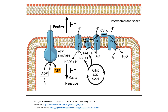This results in two reasons why hydrogen ions want to move from the intermembrane space back into the matrix. One, there is a diffusion gradient for these hydrogen ions — the concentration of hydrogen ions is higher in the intermembrane space than it is within the matrix.